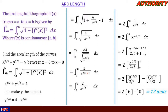Therefore, the arc length of the curve x^(2/3) + y^(2/3) = 4 from x = 0 to x = 8 is 12 units. Thank you for watching. Please subscribe, like, and share the videos. See you next time.